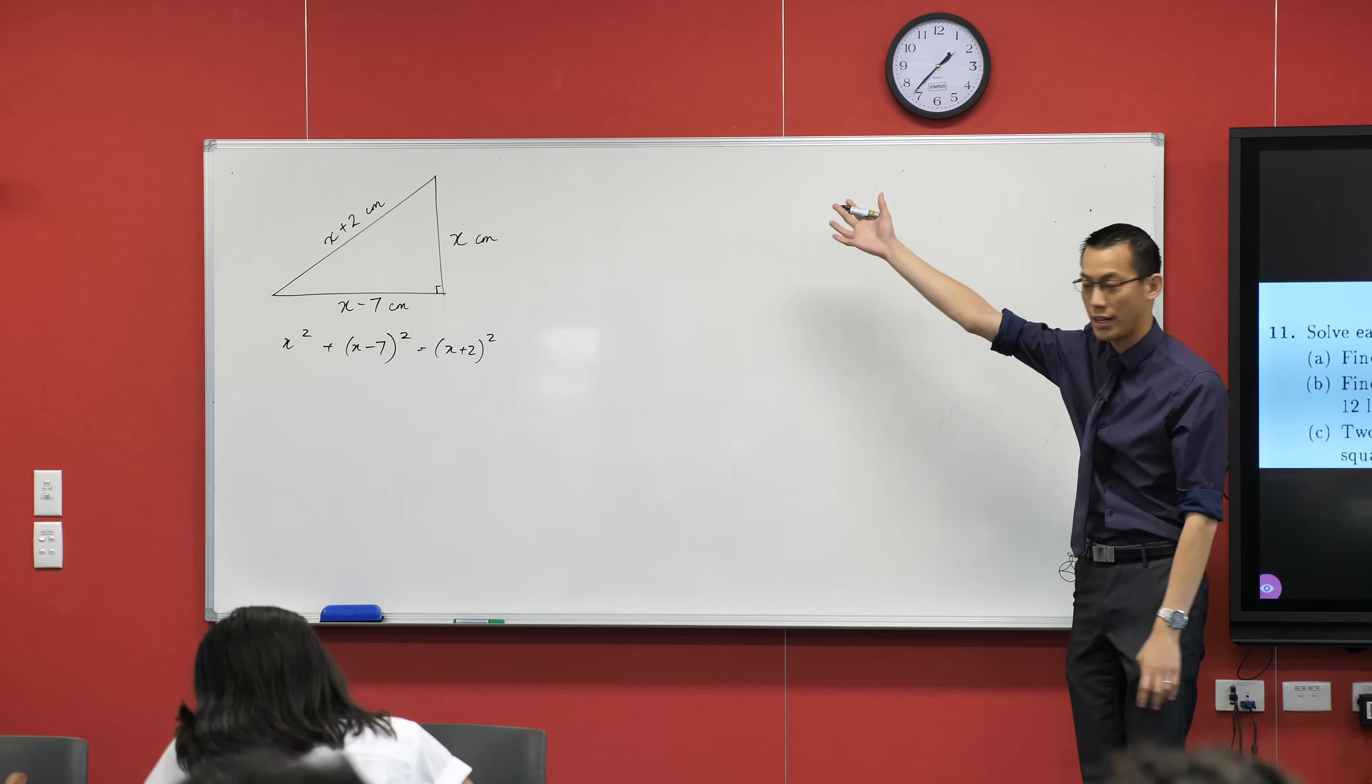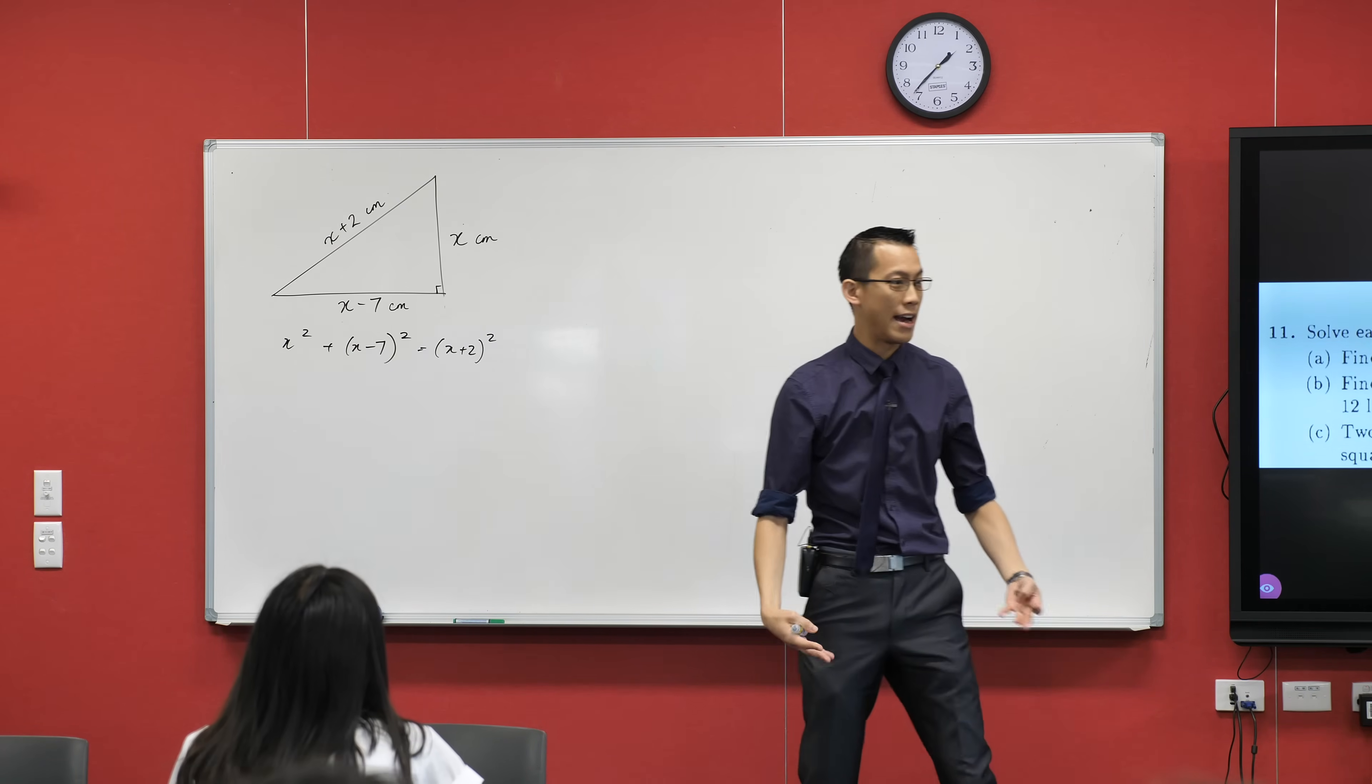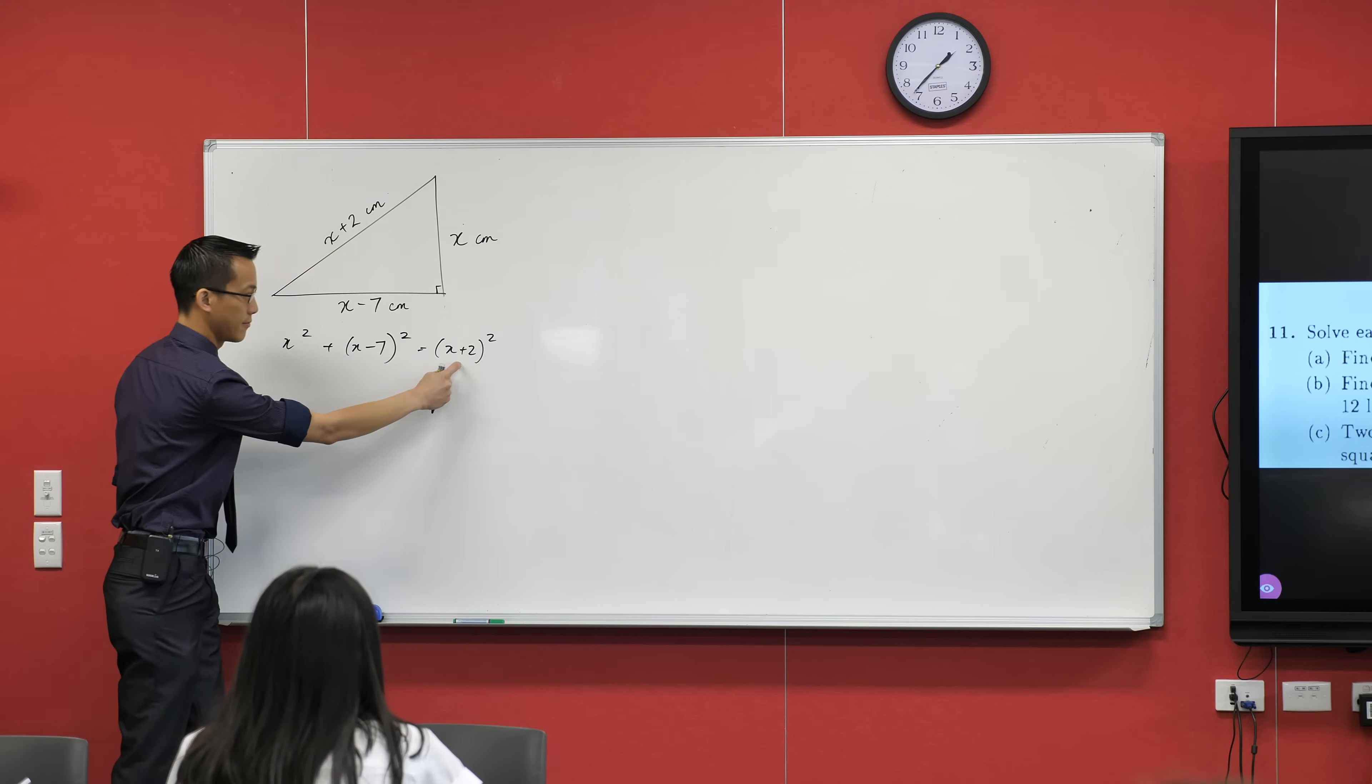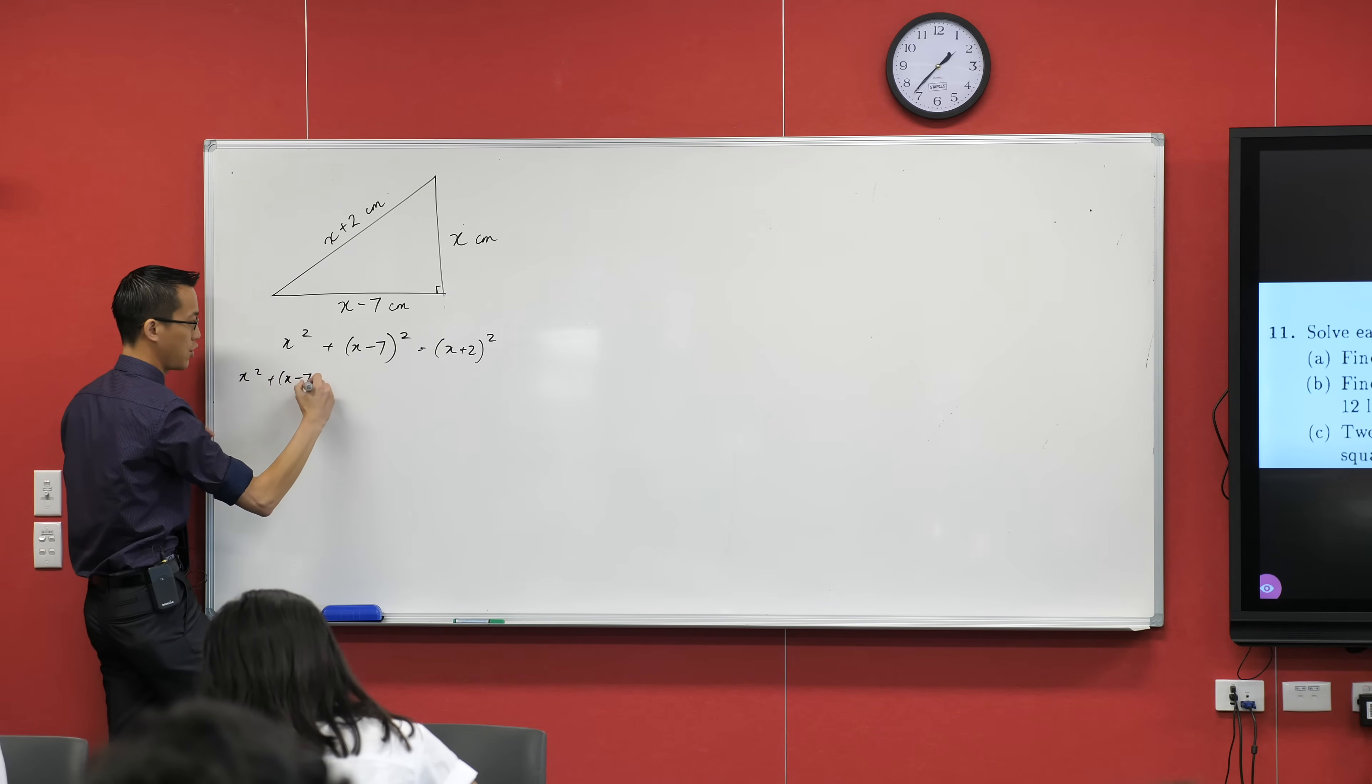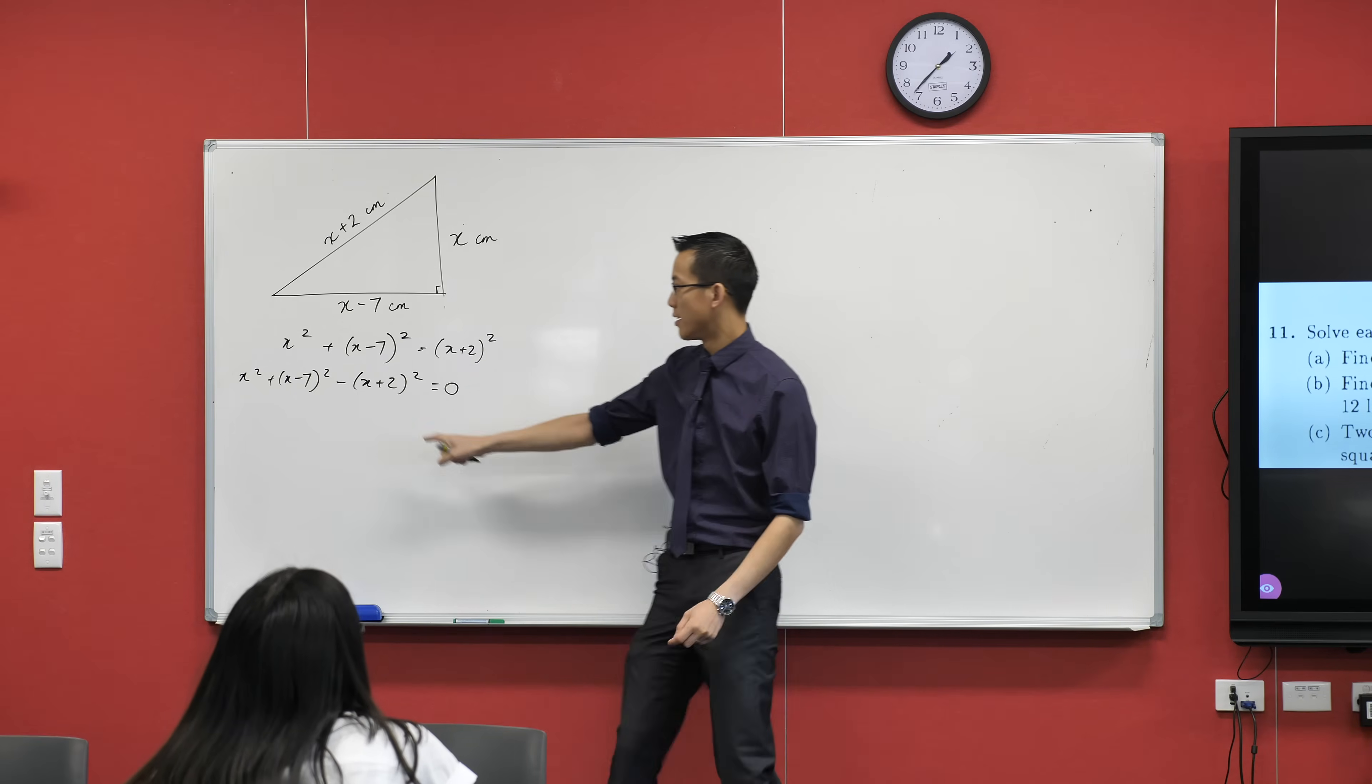Now that I know what this equation is, I can somewhat temporarily forget about the fact that it has to do with geometry, because now my quadratic brain kicks in. Help me out—what am I going to do? You'd like to subtract this guy from both sides? Let's do it. So I've got x squared plus (x minus 7) squared minus (x plus 2) all squared.